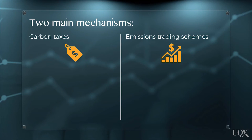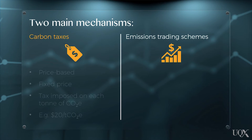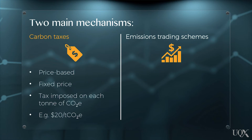Carbon pricing policies are generally categorised into two main mechanisms. First, there are carbon taxes. In this case, the government sets a fixed price for every tonne of greenhouse gases emitted — for example, $20 per tonne of CO2e.